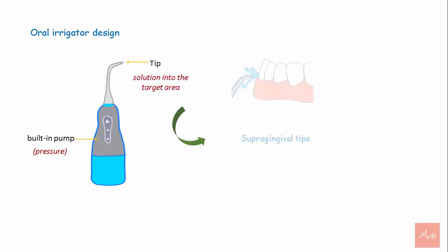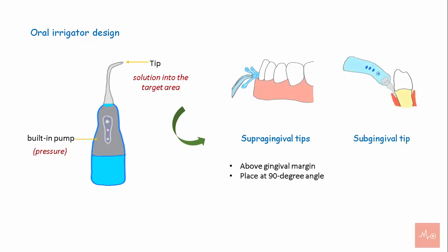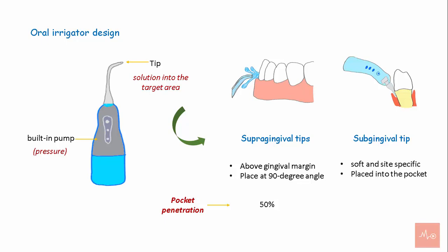Tips can be placed supragigivally or subgingivally. The supragingival tips are placed above the margin at a 90-degree angle, allowing for 50% of pocket penetration on average. The subgingival tip is soft and size-specific, allowing for 90% penetration in pockets that are 6 mm or less, and 64% penetration for pockets 7 mm and greater.